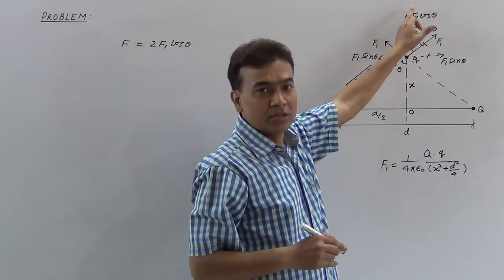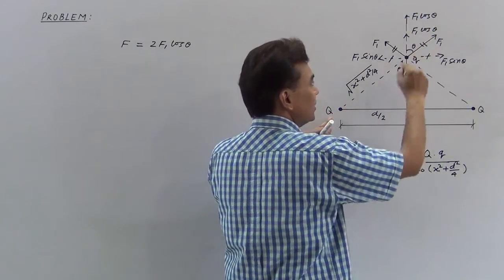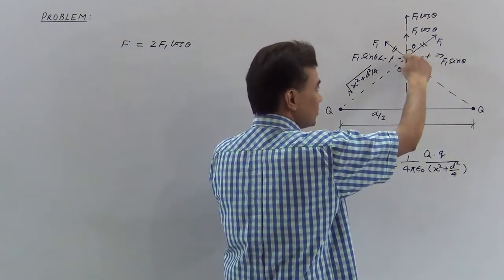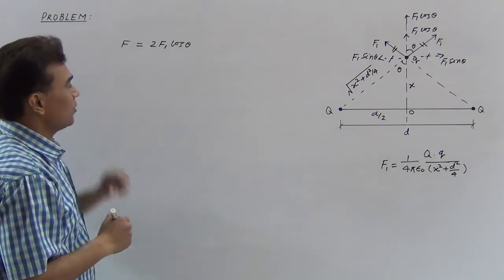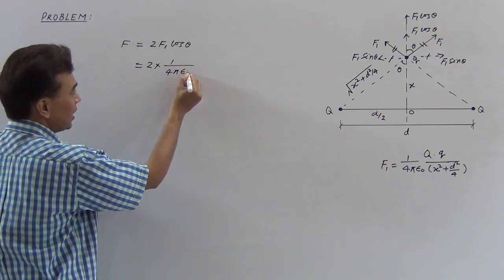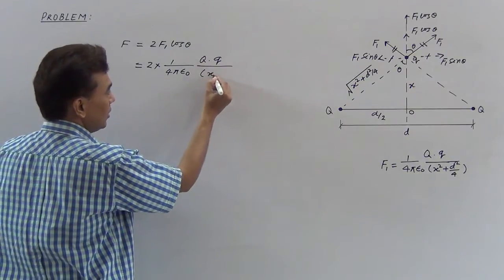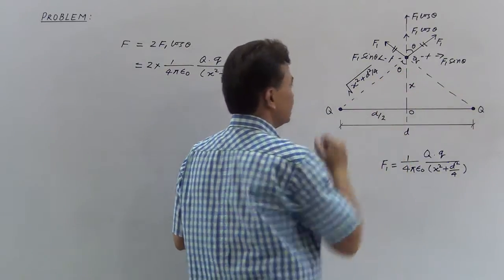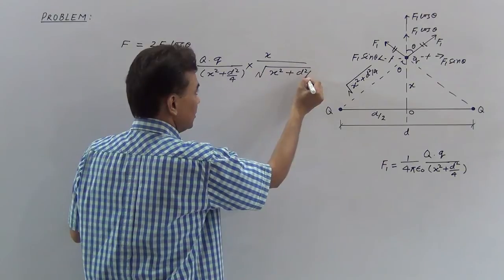The components cancel when capital Q and small q are the same sign. When opposite sign, the force directions are also the same along the bisector. Net force F equals 2 times F1, which equals (1/4πε₀) × Q × q divided by (x² + d²/4), multiplied by cosθ, where cosθ equals x divided by root of (x² + d²/4).